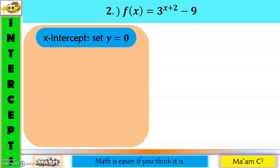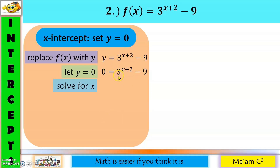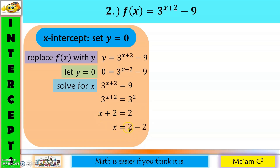Next example: start with the x-intercept. Replace f of x with y, then set y equal to zero: zero equals three raised to x plus two, minus nine. Move negative nine to the other side: three raised to x plus two equals nine. Replace nine with three squared — now the bases are the same. So x plus two equals two, and moving two to the other side gives x equals zero. My x is zero and my y is zero. Therefore, the x-intercept is (0, 0).